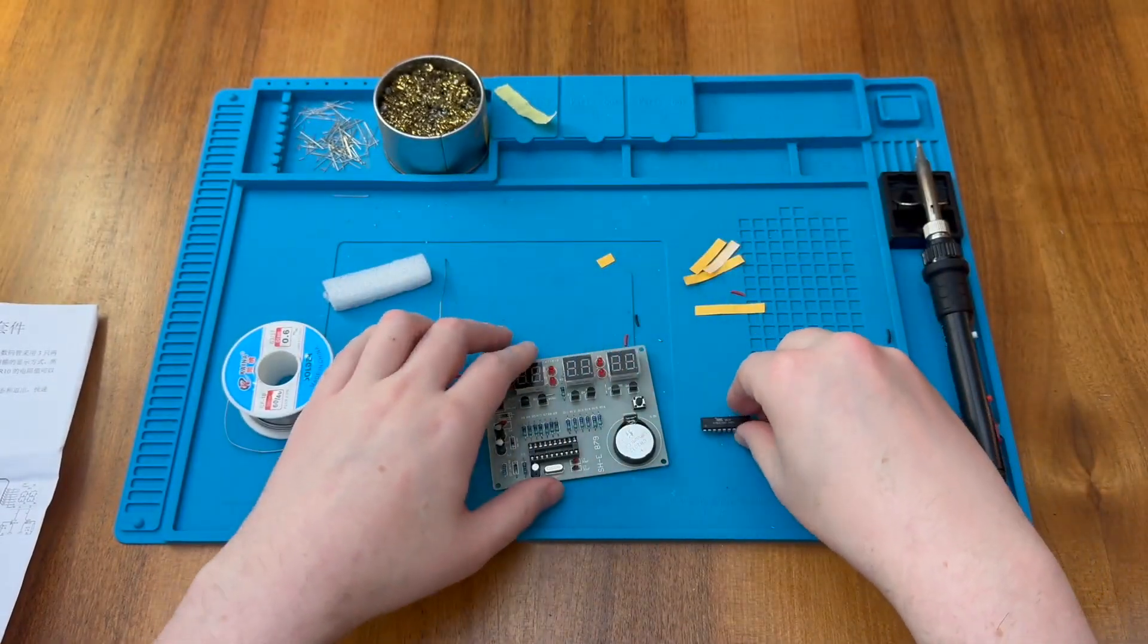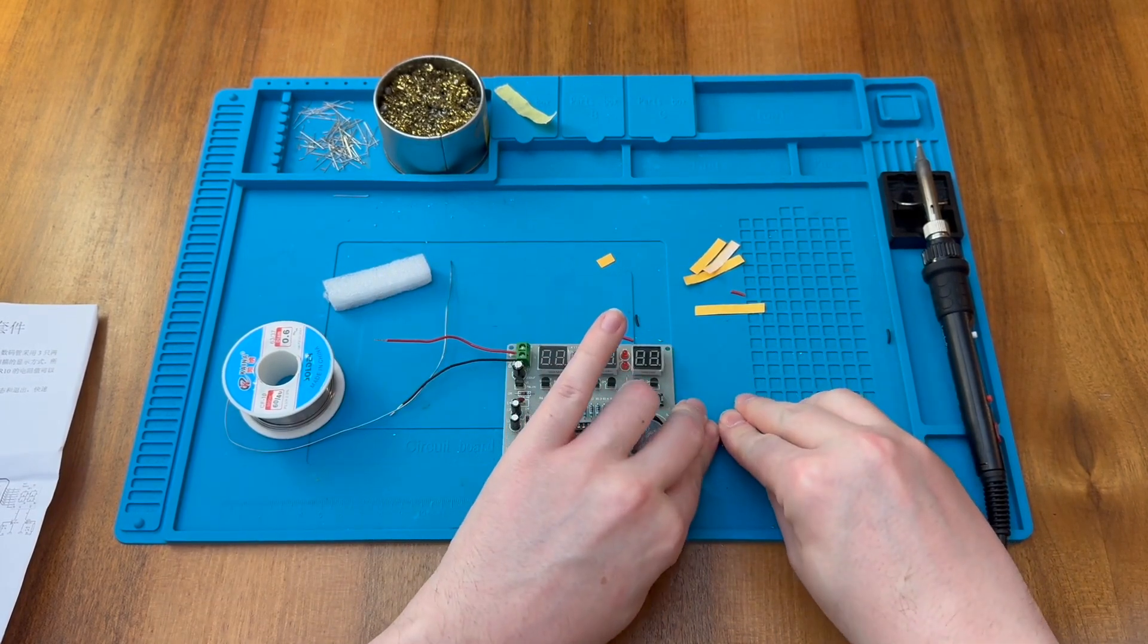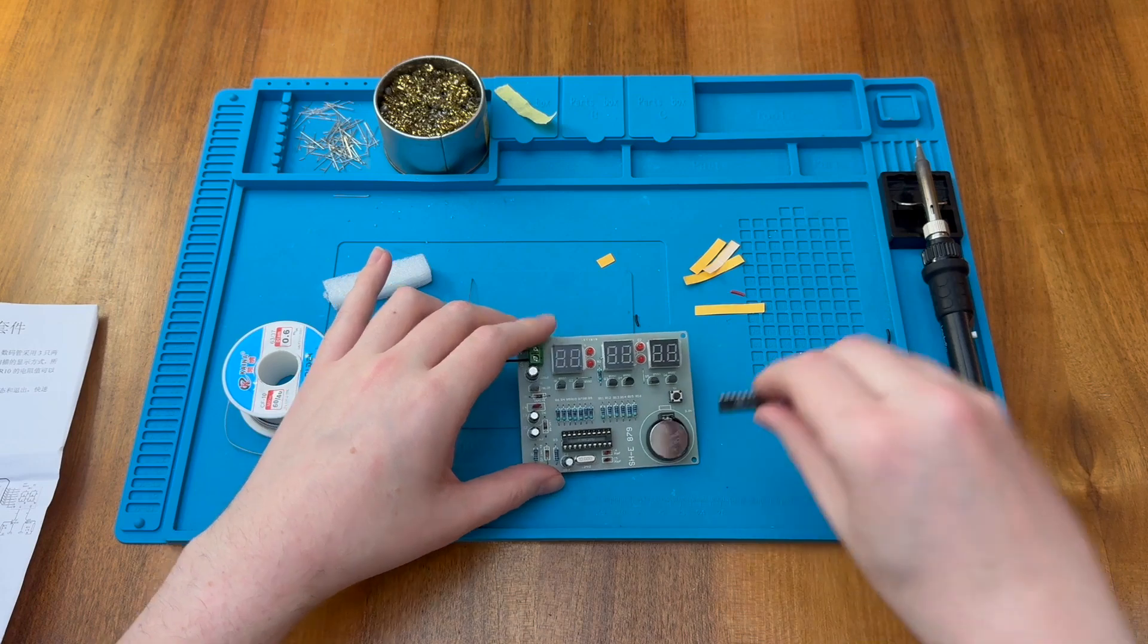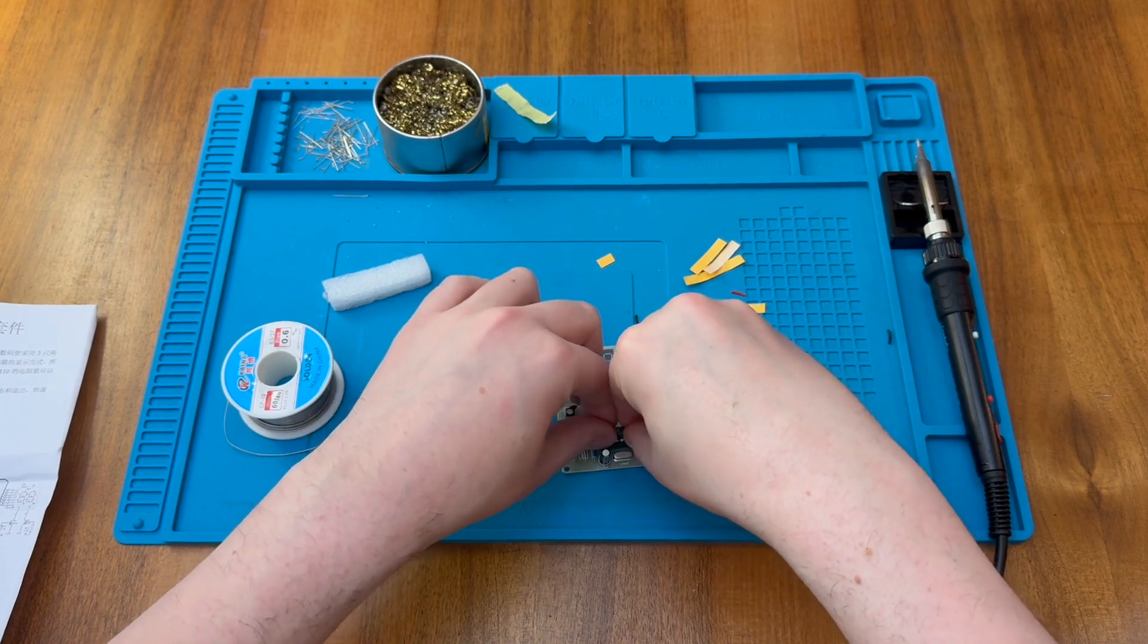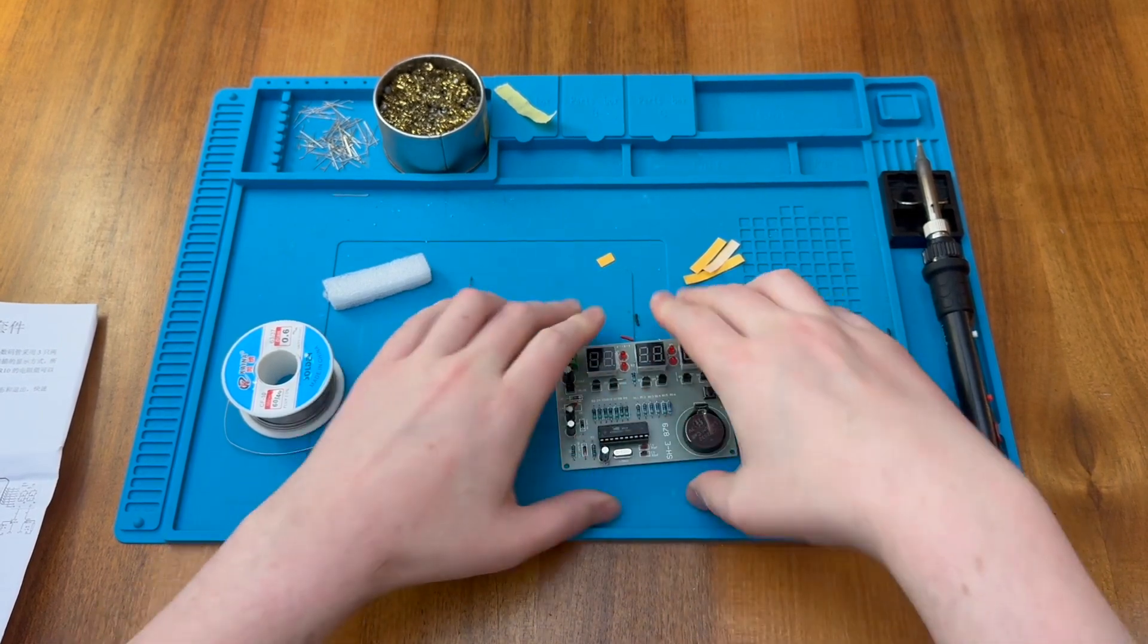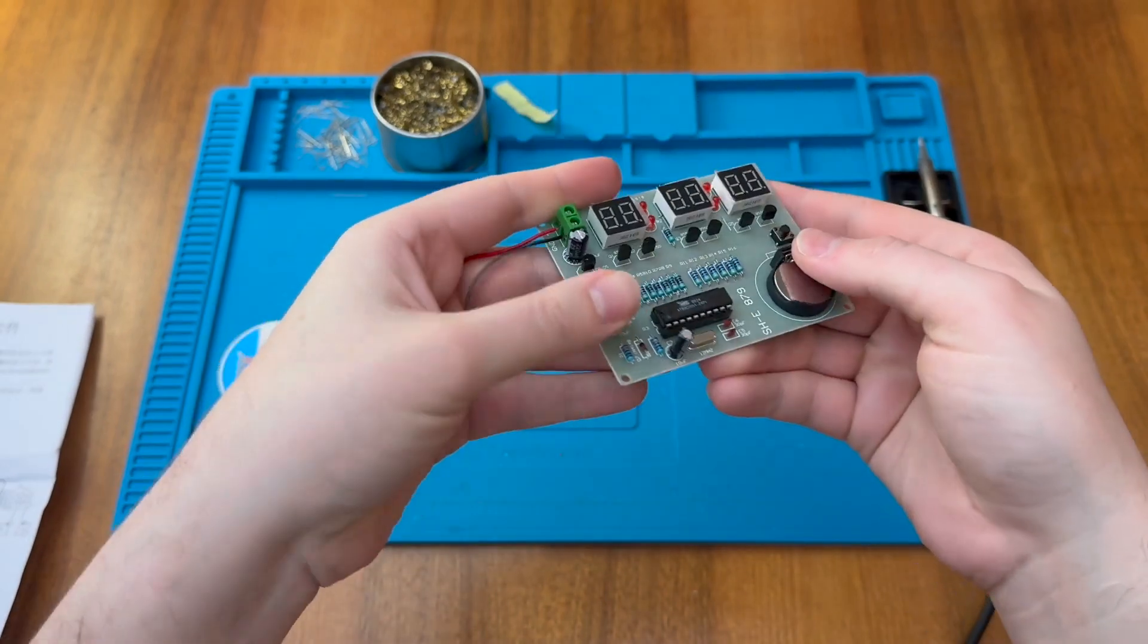The last thing to do, of course, is to pop the chip in. So as usual, I'm just going to rock it very slightly just to straighten out the legs and make sure we get it in the right way around. So notch to match the notch in the socket. There we go. That slide in here. Nice and smoothly. No bent pins.